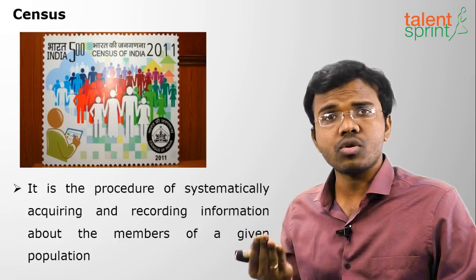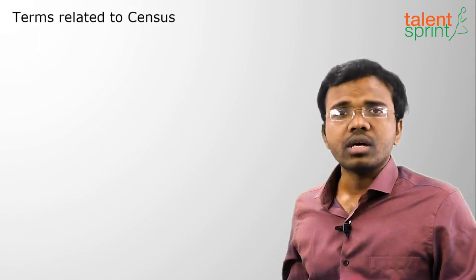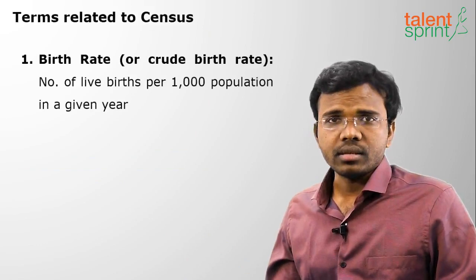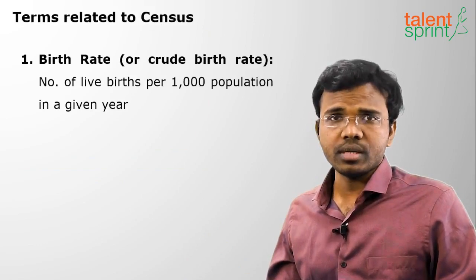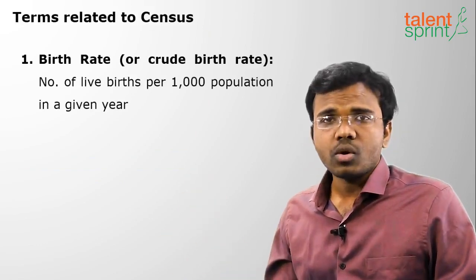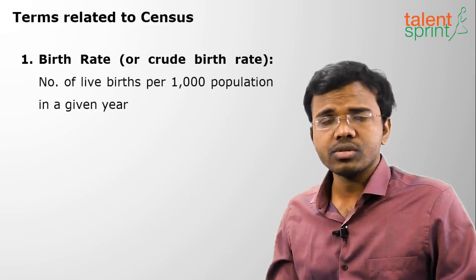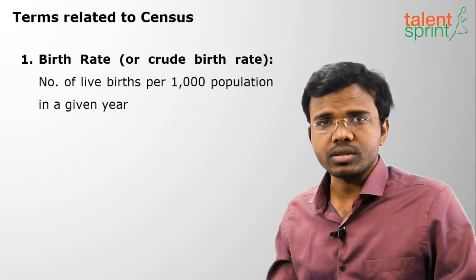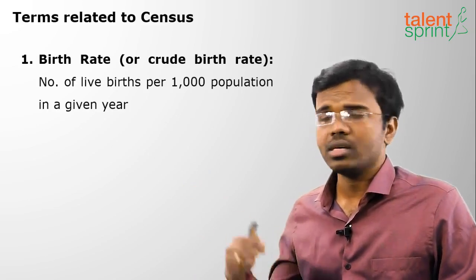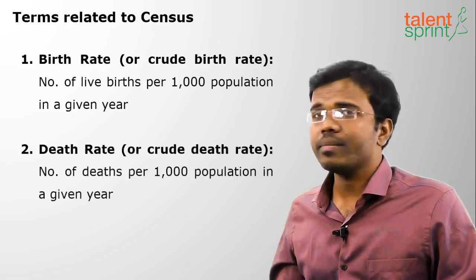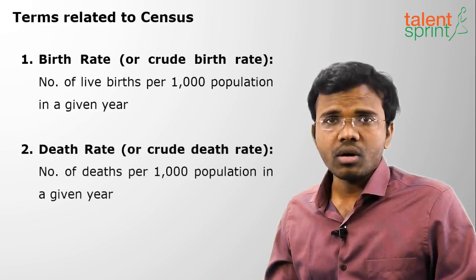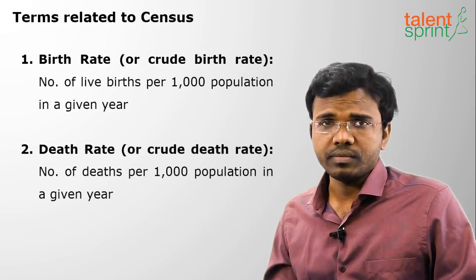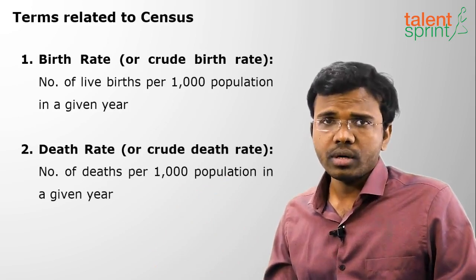The first term related to census is birth rate, also called crude birth rate. It is the number of live births per thousand population in a year. Suppose the number of births are 25 per thousand population, so 25 per thousand is the crude birth rate. The next term is crude death rate, which is the number of deaths per thousand population in a year.